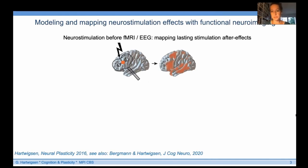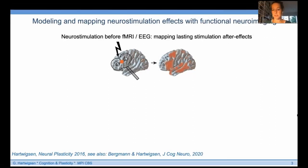My group is interested in the adaptive plasticity in neural networks for cognition at the systems level. To investigate this, we combine modeling approaches with mapping of neurostimulation effects after functional neuroimaging or EEG. I want to give you an overview and examples of two approaches on how we can combine neurostimulation and neuroimaging to map and model such data.